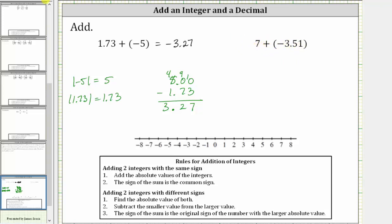Because we're adding numbers with different signs, we begin by determining the absolute value of both. The absolute value of seven is seven. The absolute value of negative 3.51 is positive 3.51.